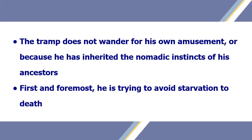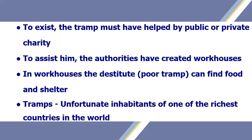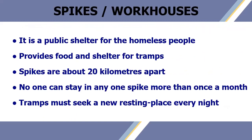He is trying first and foremost to avoid starving to death. To exist, the tramp must be helped by public or private charity. To assist him, the authorities have created workhouses, where the destitute can find food and shelter. These tramps are unfortunate inhabitants of one of the richest countries in the world. The workhouses are otherwise known as spikes — a public shelter for the homeless people that provides food and shelter for tramps.